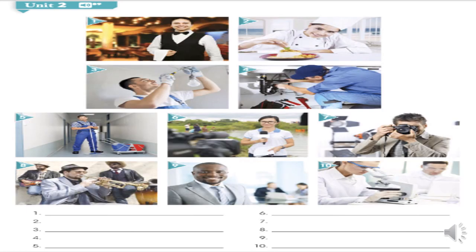Page 125. Unit 2. Track 89. 1. Waiter. 2. Chef. 3. Electrician. 4. Plumber. 5. Janitor. 6. Reporter. 7. Photographer. 8. Musician. 9. Businessperson. 10. Scientist.